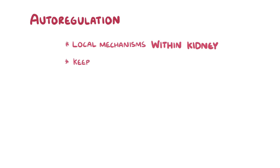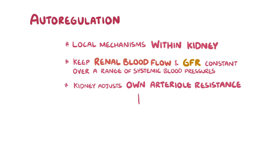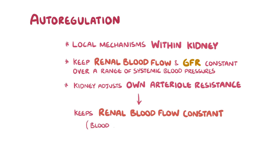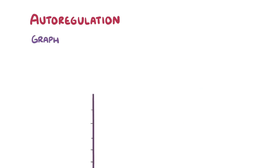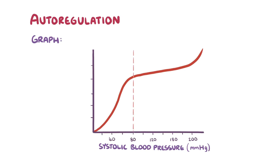Now let's look at autoregulation, which refers to local mechanisms within the kidney that keep renal blood flow and glomerular filtration rate constant over a range of systemic blood pressures. In other words, these are mechanisms that allow the kidney to adjust its own arterial resistance to keep renal blood flow constant even when blood pressure ranges between 80 and 200 millimeters of mercury. This can be seen graphically: when systolic blood pressure falls below 80 mmHg, renal blood flow is also low.